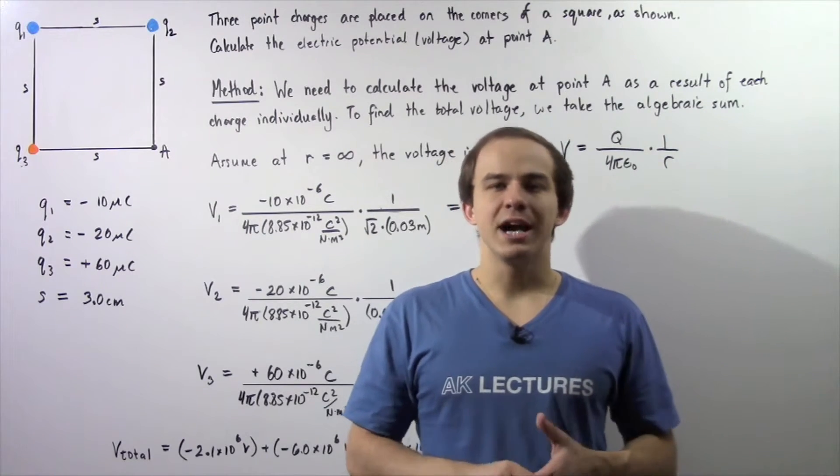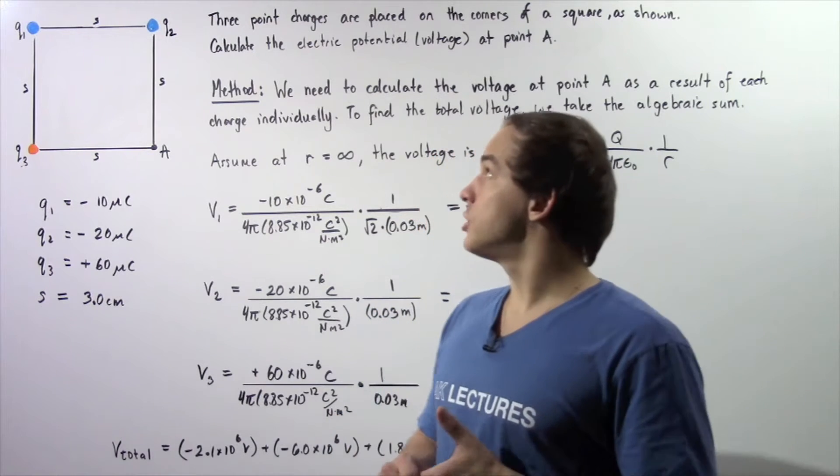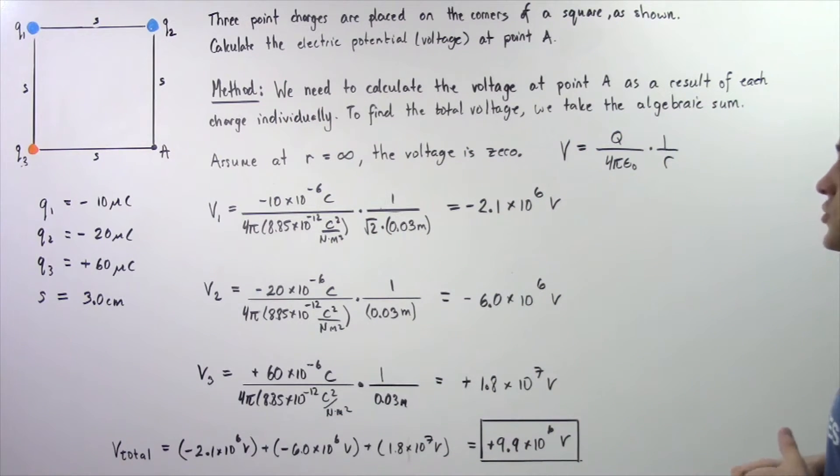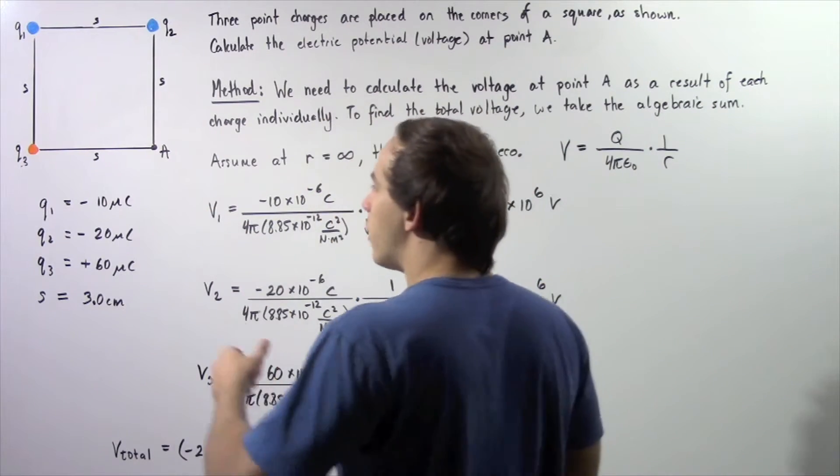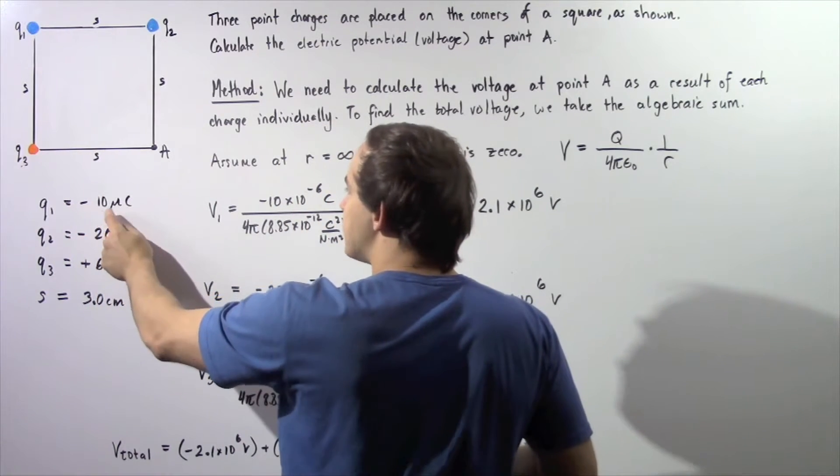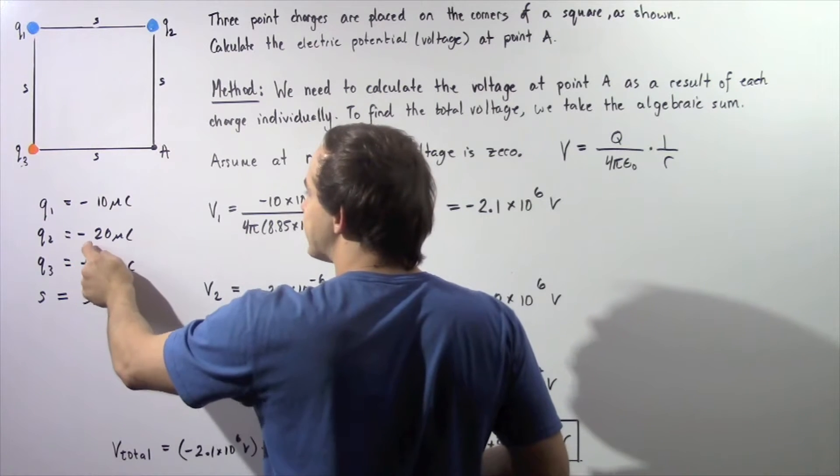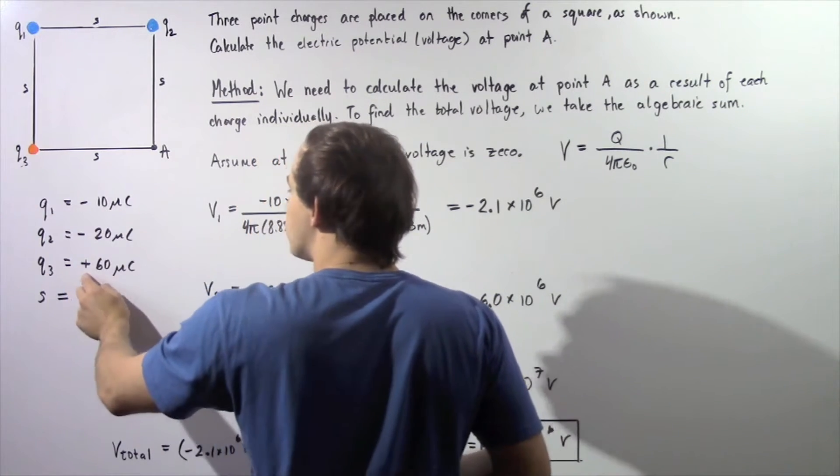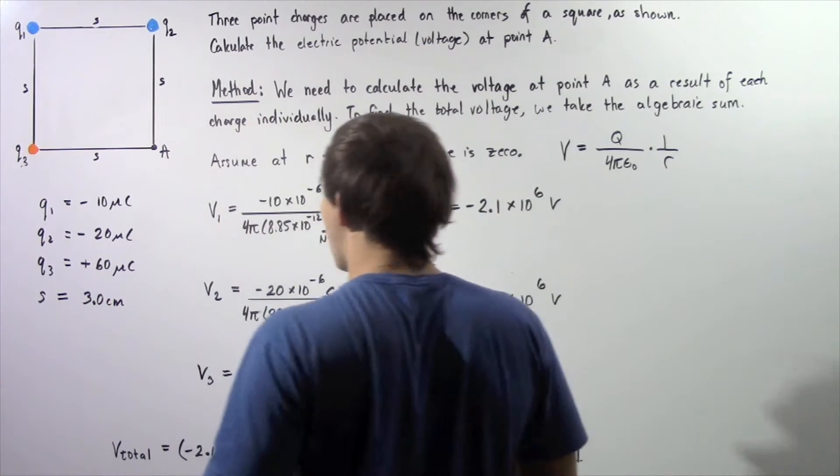Let's look at the following diagram in which we're going to calculate the electric potential. Three point charges are placed on the corners of a square as shown in the diagram. Point charge Q1 has a charge equal to negative 10 microcoulombs, charge Q2 is equal to negative 20 microcoulombs, and charge Q3 has a quantity of charge equal to positive 60 microcoulombs.